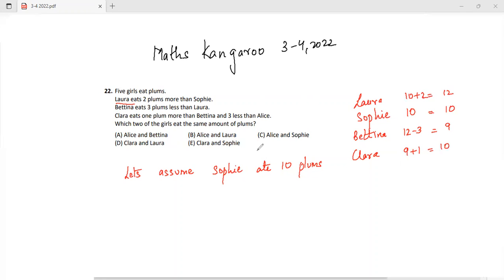And three less than Alice, so that means Alice has to be how much? Alice has to be Clara plus 3, which is 13. If you do it this way, now what does the question say? Which two of the girls eat the same amount of plums? So the two girls with the same amount of plums is Sophie and Clara.